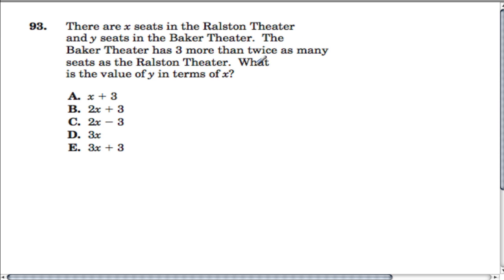In this question, we have an algebra situation where there's some amount of seats X in one theater and there are Y seats in the other theater. And we have now a relationship between those two variables. So the Baker Theater, I'm going to label it, is the Y, and the Ralston is the X.